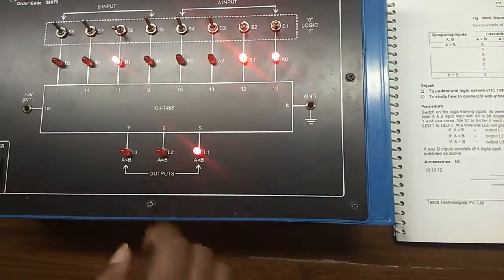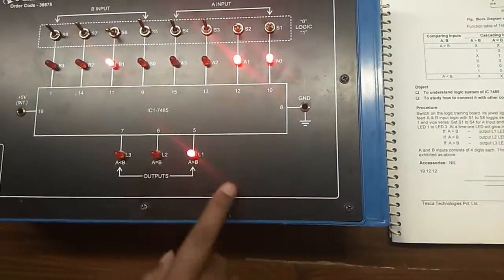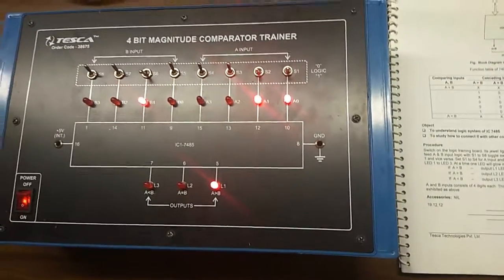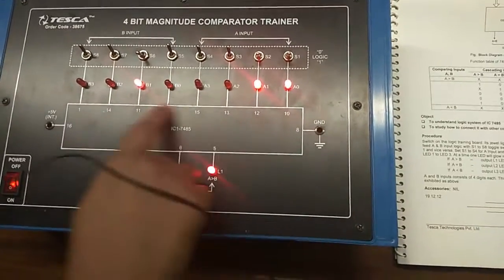Again, if I change this input, you can see it has changed to A greater than B. Like this, you can compare any combination of numbers with the help of these switches.